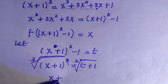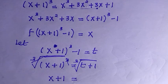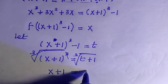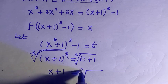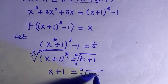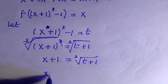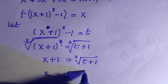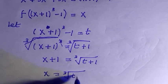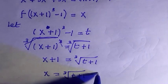x + 1 = ³√(t+1). Making x the subject by transferring 1 to the other side, we have x = ³√(t+1) - 1.